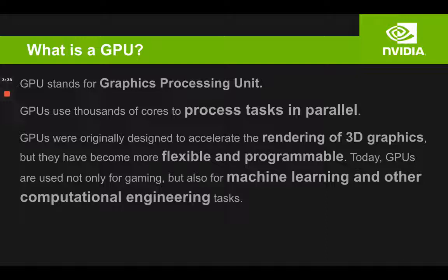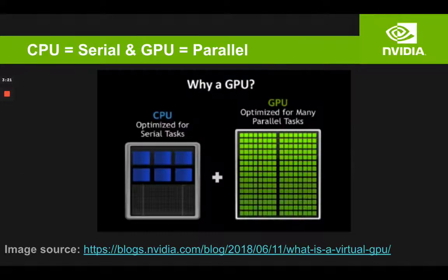However, GPUs have also become more flexible and programmable. Today GPUs are used not only for gaming but also for machine learning and computational engineering tasks, and the reason is their parallel processing nature. If you think of CPUs, think of serial processing, whereas if you think of GPUs, think of parallel processing.